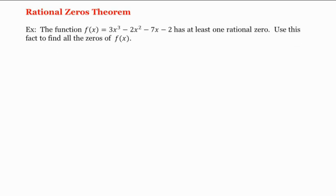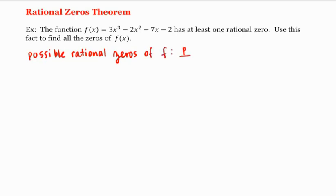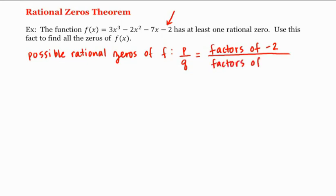Let's learn about the rational zeros theorem. For example, let's find all the zeros of this function f. We know it has at least one rational zero, and we're going to use the rational zeros theorem to help us. The theorem gives us all the possible candidates for rational zeros of a polynomial. It tells us that the possible rational zeros of f are of the form p divided by q, which equals factors of the constant term — in this case negative two — divided by factors of the leading coefficient — in this case three.